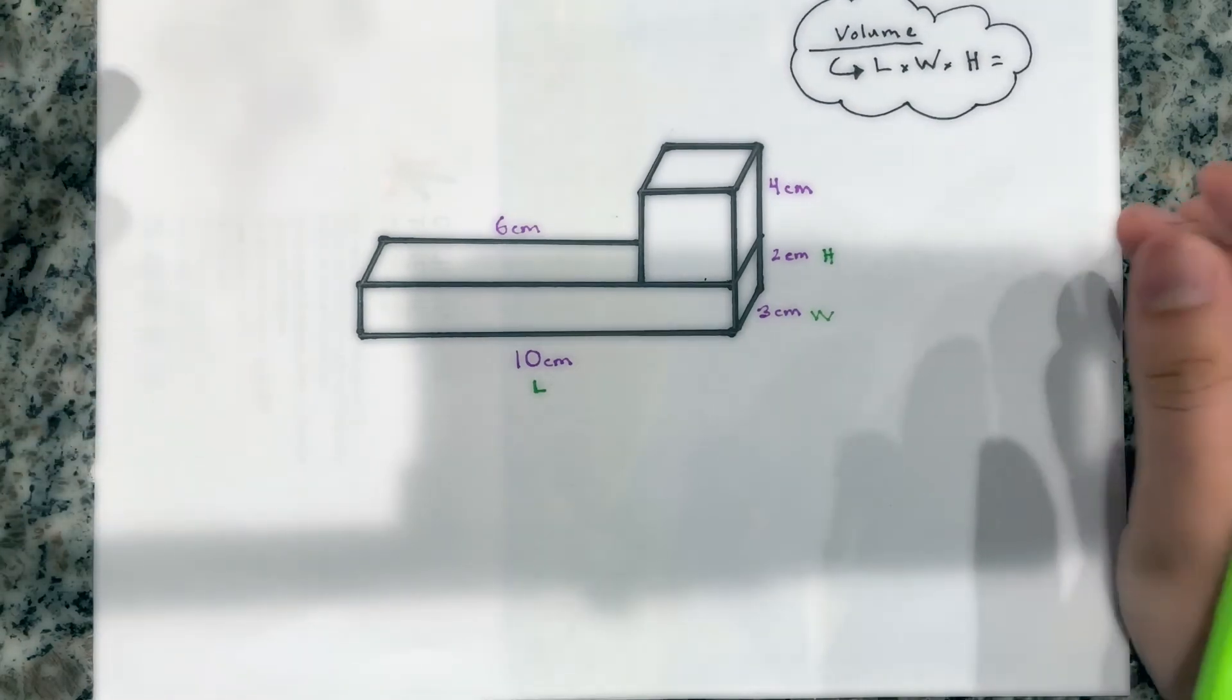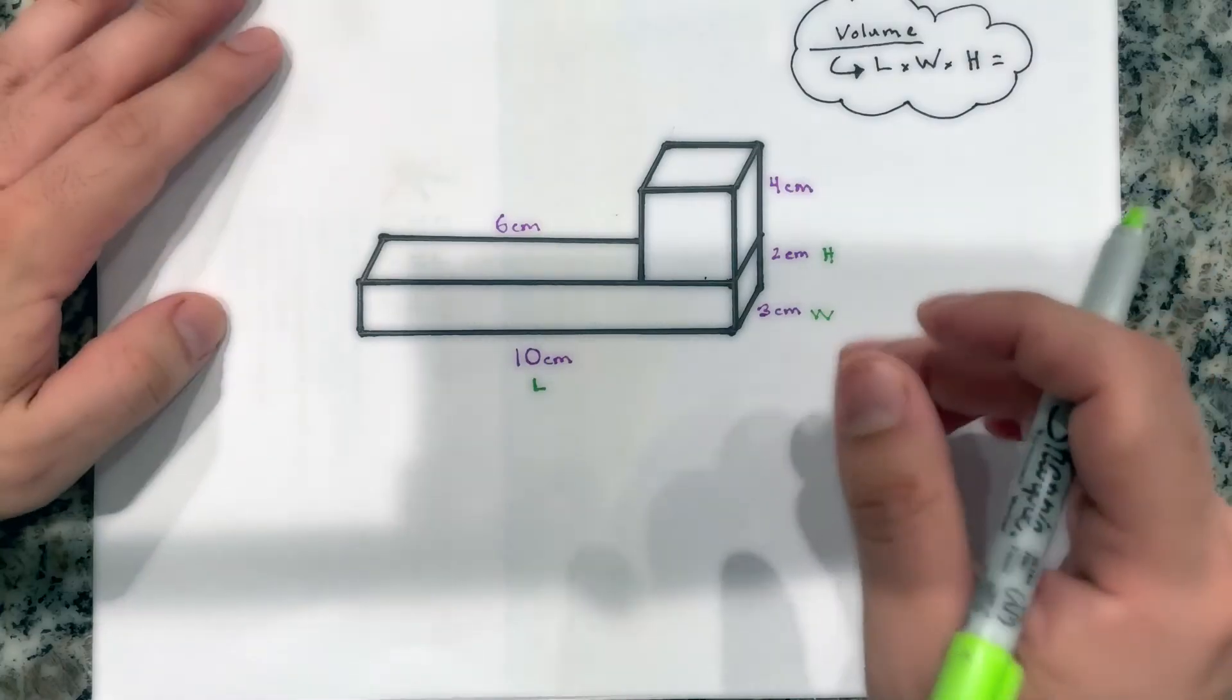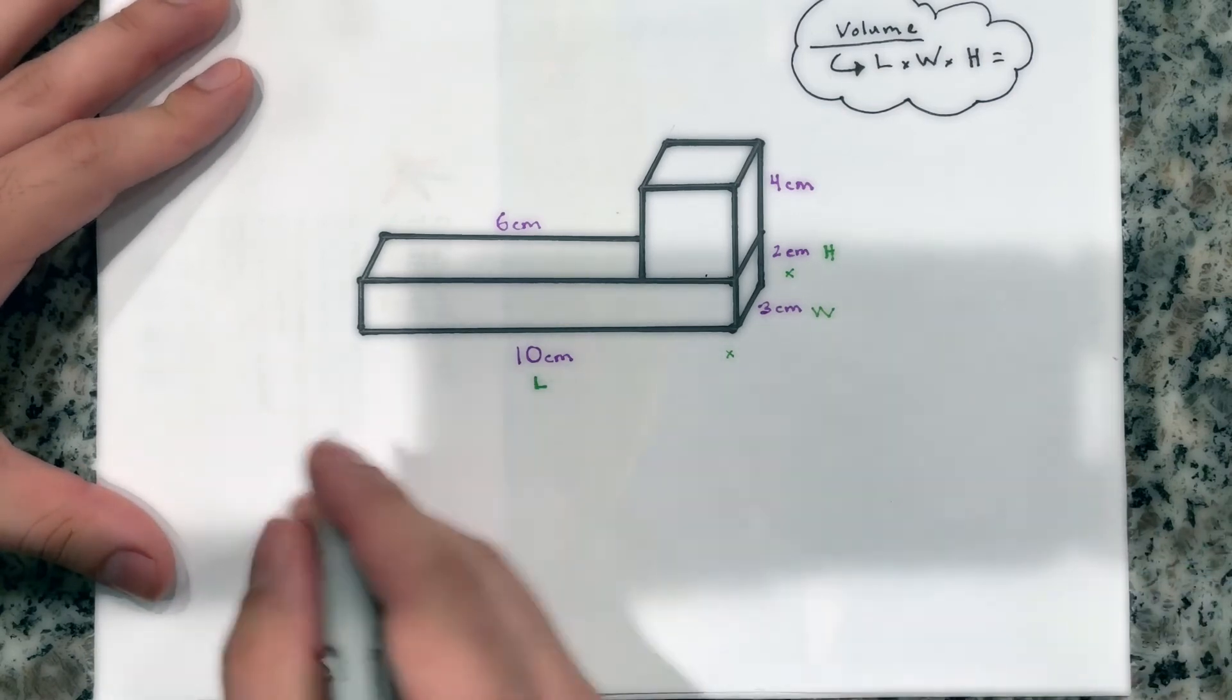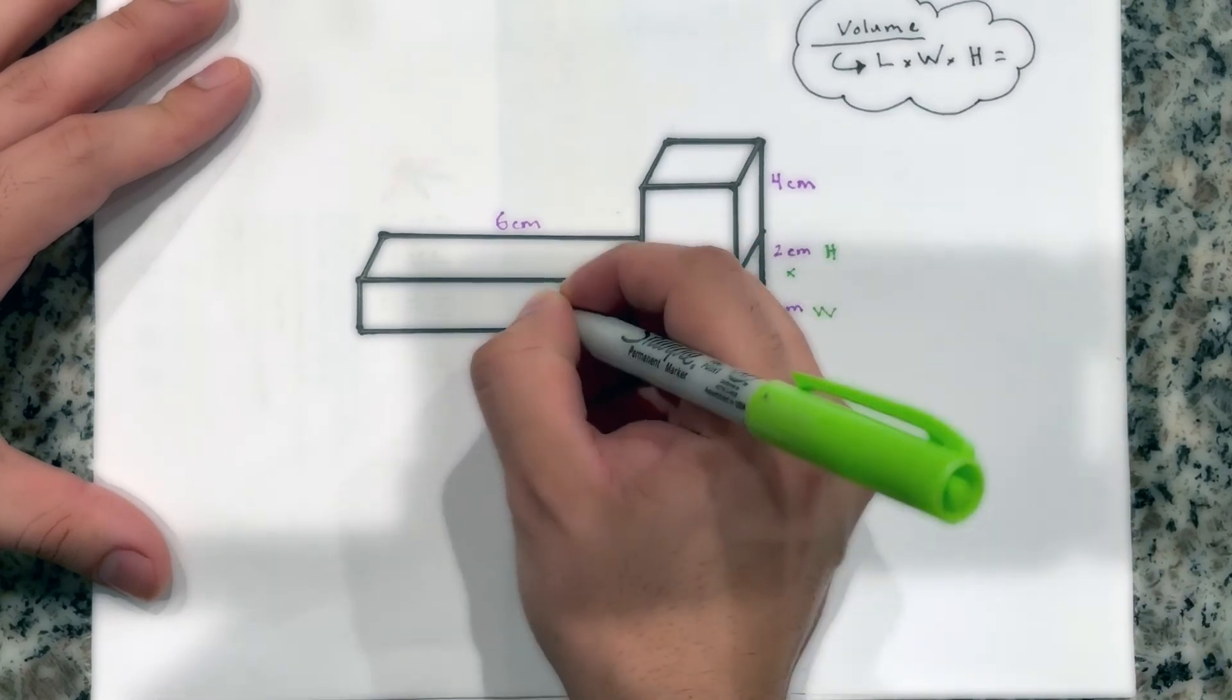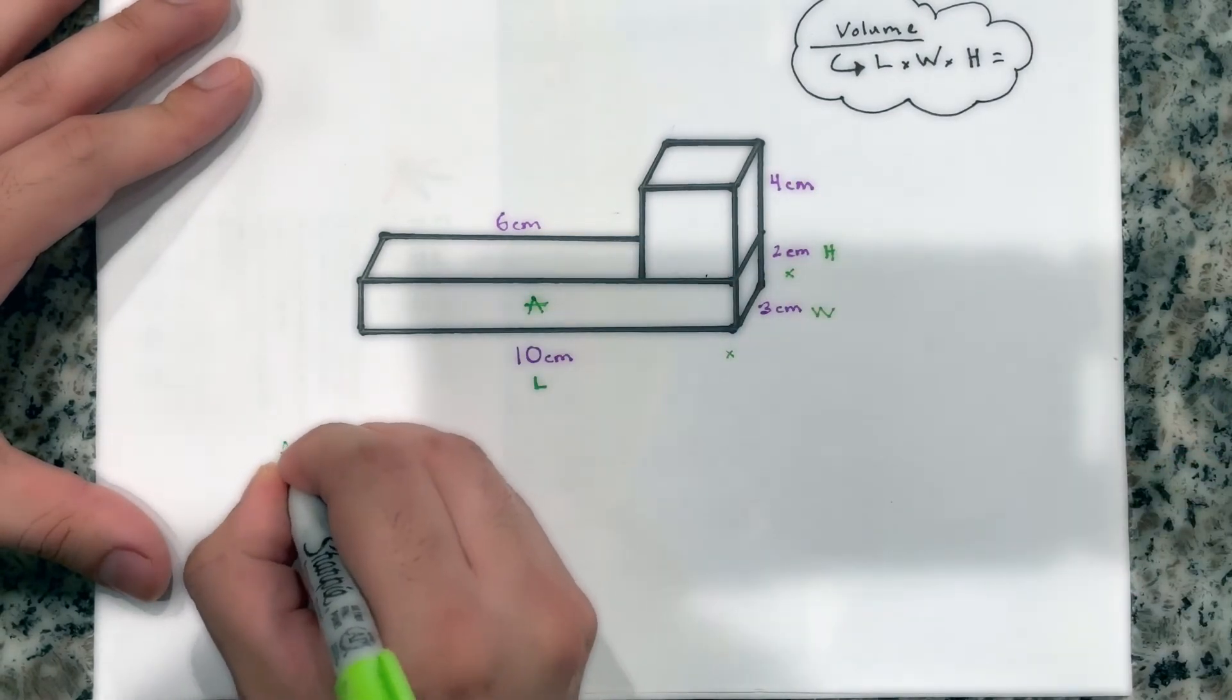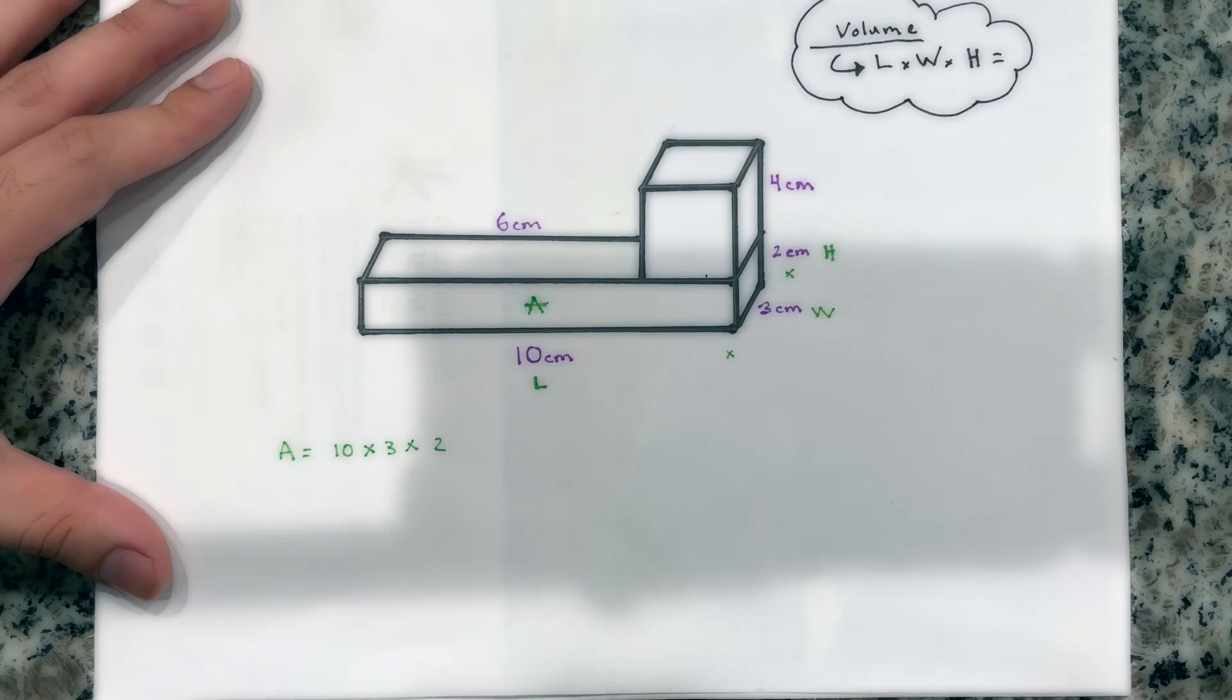All right, so we have the secret formula for the bottom rectangle. You're very smart. And we could just multiply all those bad boys up. So I am going to do that over here. I'll call this bottom box, we'll call it letter A, because a lot of times you see that on your problems. So here's bottom box A. So A equals 10 times 3 times 2. Perfect.